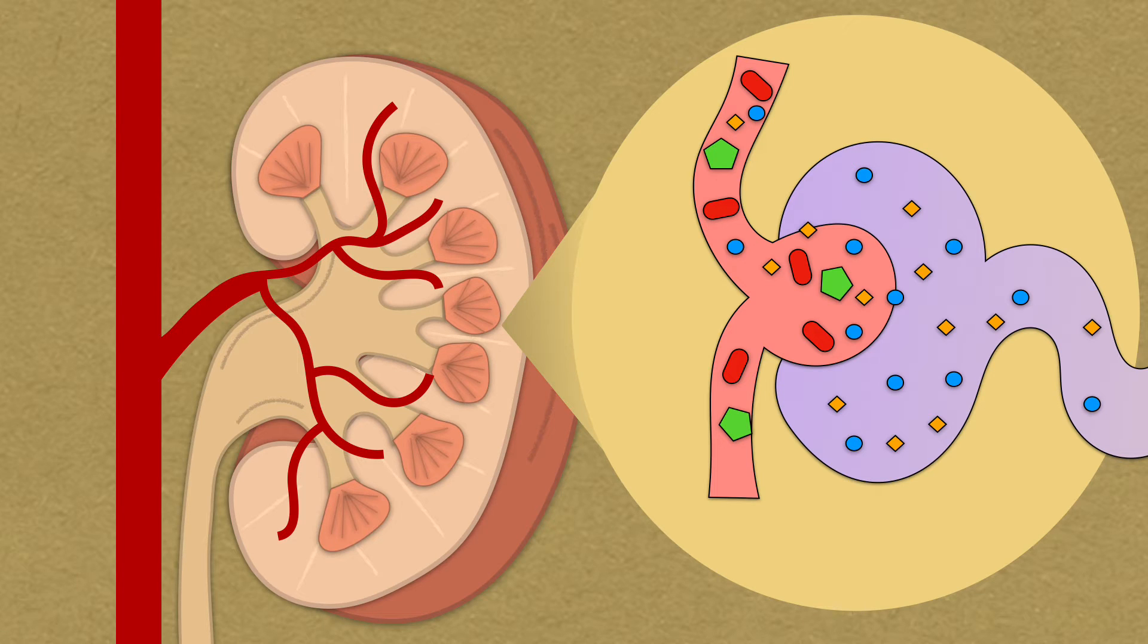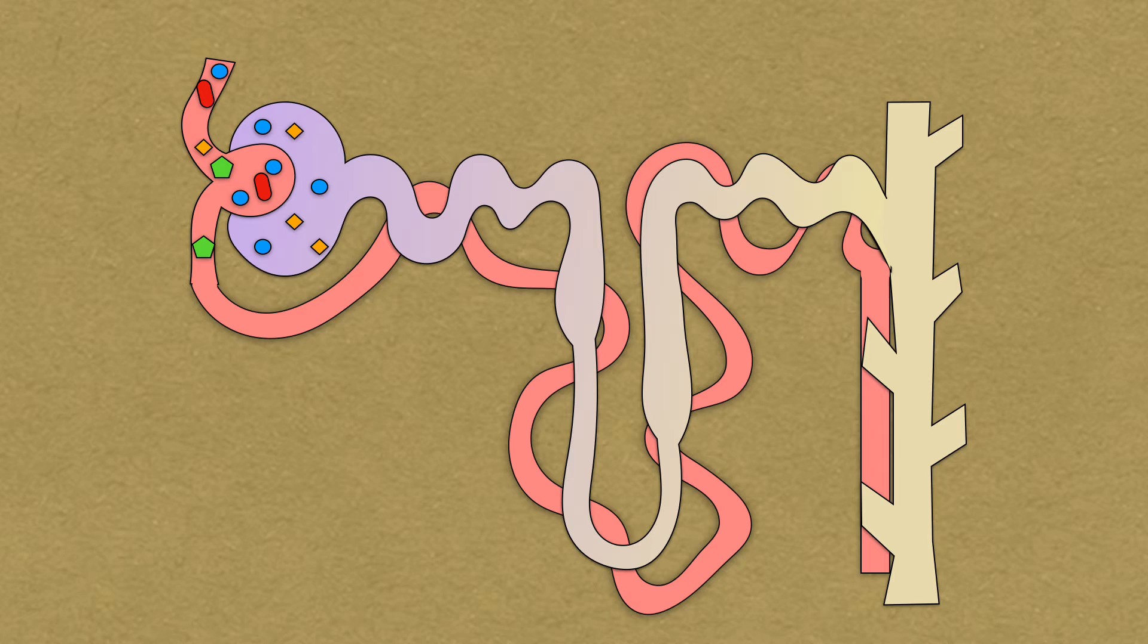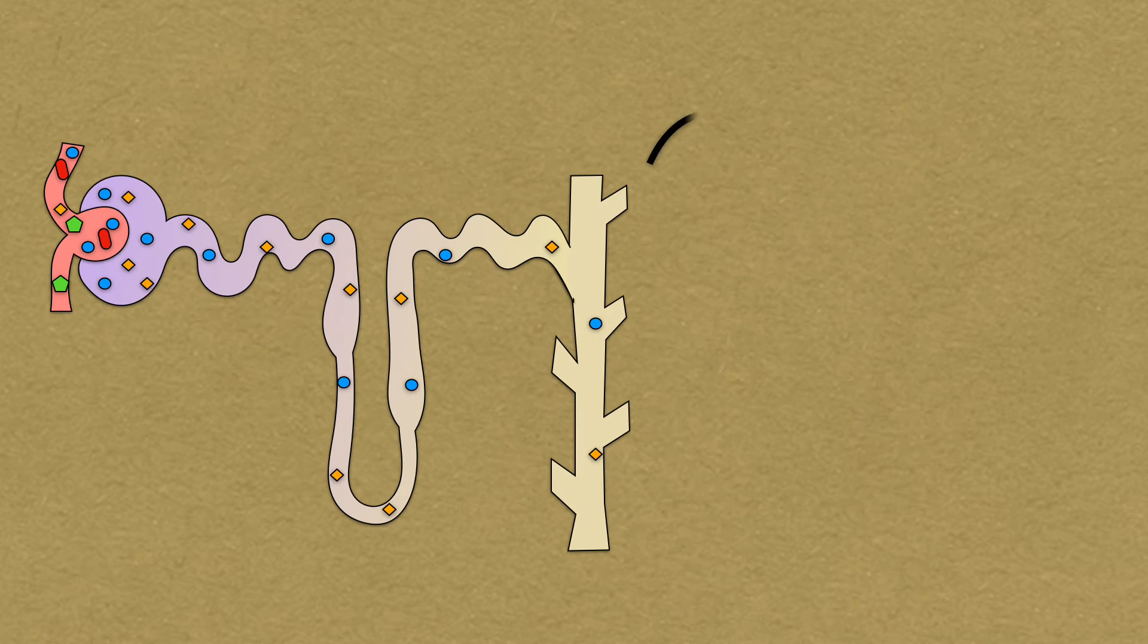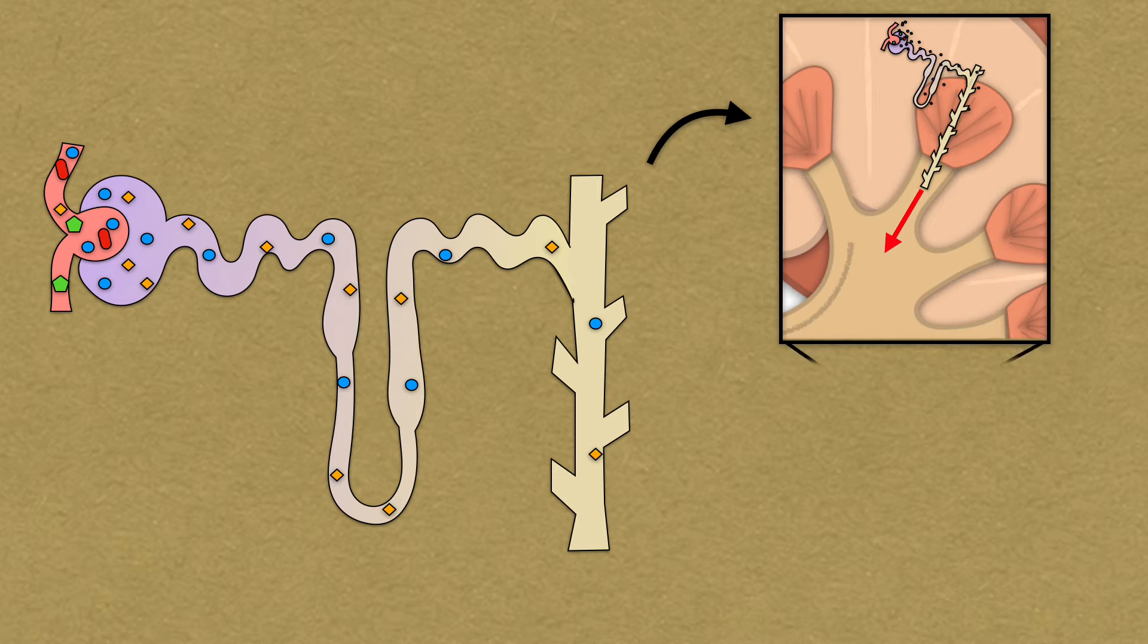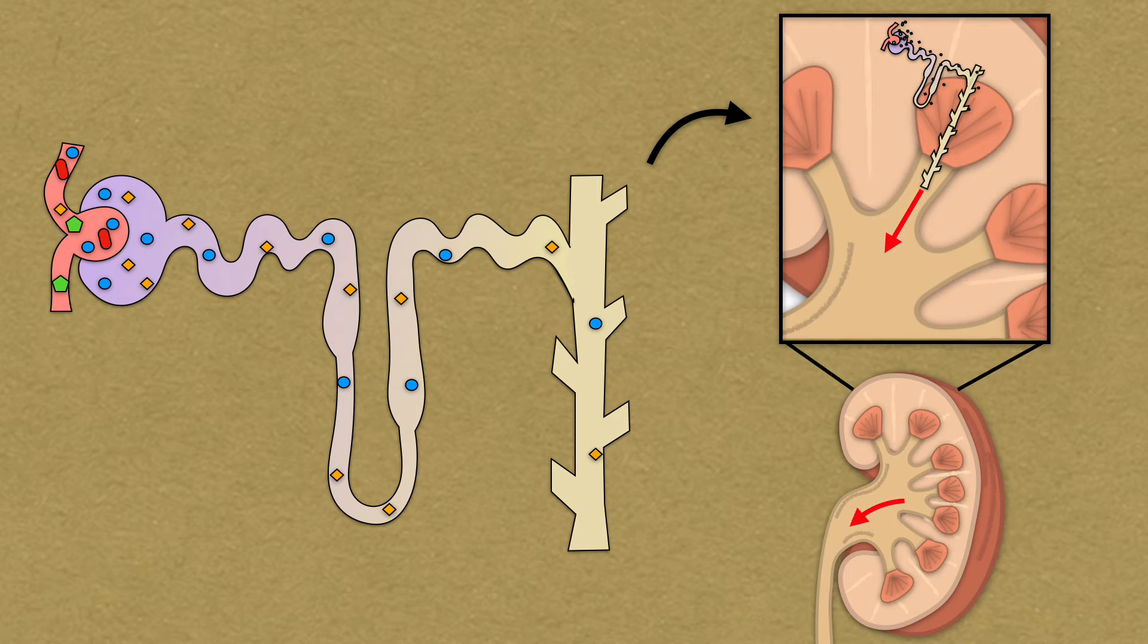The filtrate from the glomerulus enters the capsule and then into the renal tubules, where water and solutes like glucose and salts needed for normal body function are reabsorbed from the filtrate into the blood and waste products are secreted from the blood into the urine. The renal tubules drain into the renal calyces, which lead to the renal pelvis and the ureter.